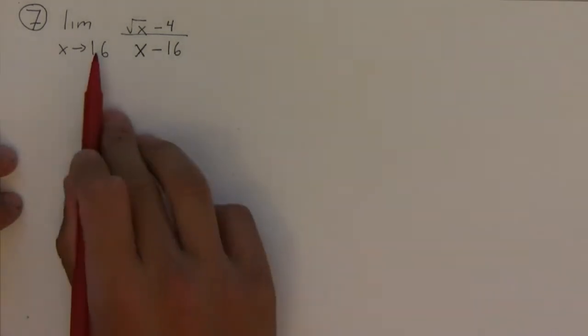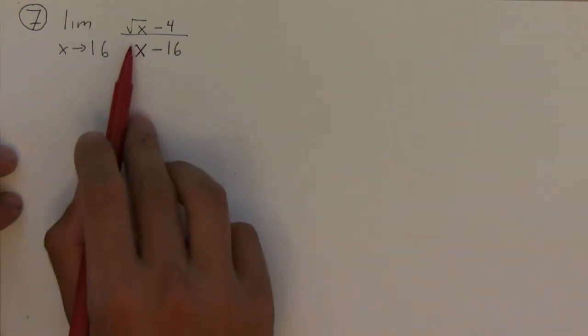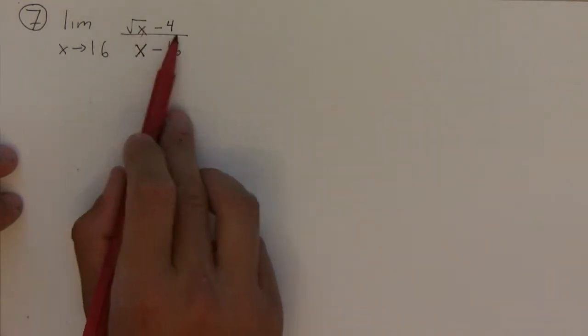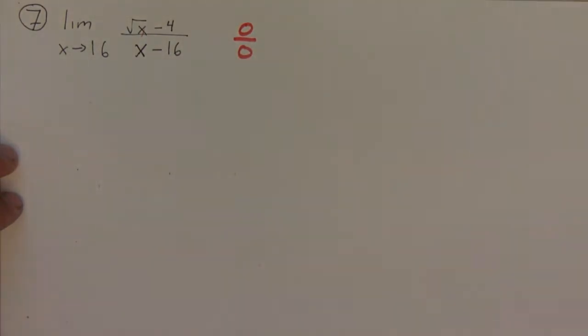Okay, so again as usual, when finding our limit we try first to plug it in and see what happens. If I plug in 16 into this one, I would get 4 minus 4 is 0 over 0, which is an indeterminate form. So now I have to do some more algebra to try to figure out what's going on.